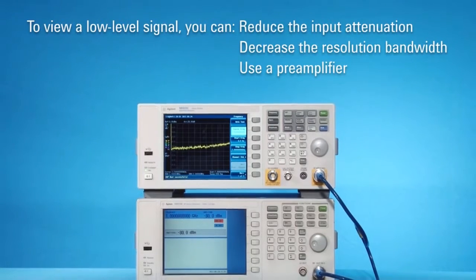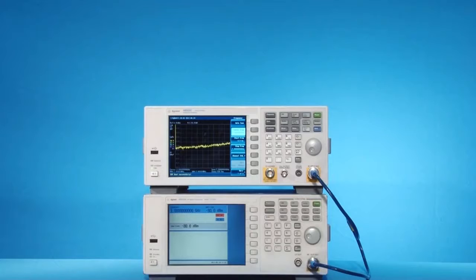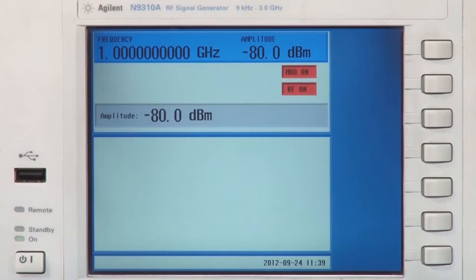Today we will show you how to use an Agilent N9322C Basic Spectrum Analyzer BSA to easily detect low-level signals. To illustrate, let's say we want to view a signal with a frequency at 1 GHz and amplitude at minus 80 dBm.